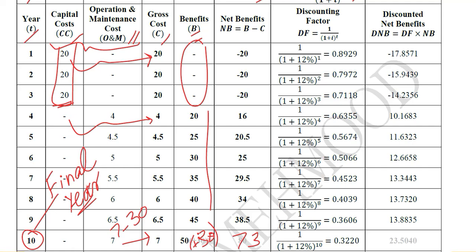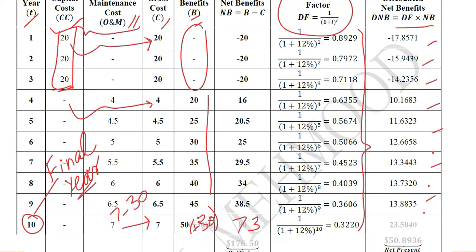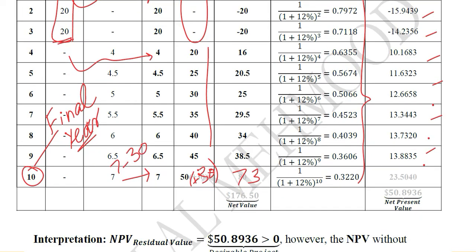We can then do the same process we have learnt before — the discounting factor will be used. Here the calculations are done, and finally these net benefits are multiplied by the discounting factor. Summing the products on a yearly basis, we get the final result, which is approximately 50.8936. This is the present value in the case of having residual value.